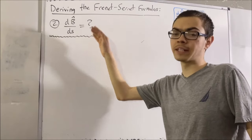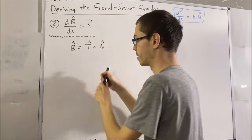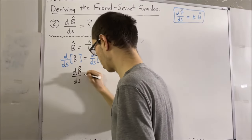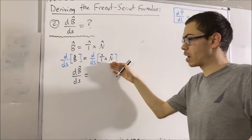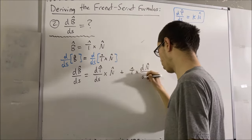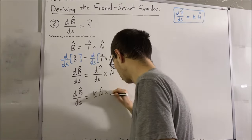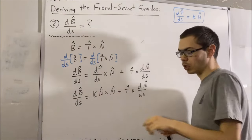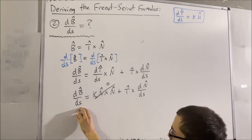To find dB/ds, we write the definition of the unit binormal vector and take the derivative with respect to arc length on both sides. We get dB/ds equals the derivative of a cross product, which follows the ordinary product rule: derivative of the first cross the second, plus the first cross the derivative of the second. We know that dT/ds is curvature times the unit normal vector. In the first cross product, we have a vector pointing in the same direction as N — the cross product of two parallel vectors is zero. So we now have dB/ds equals T cross dN/ds.